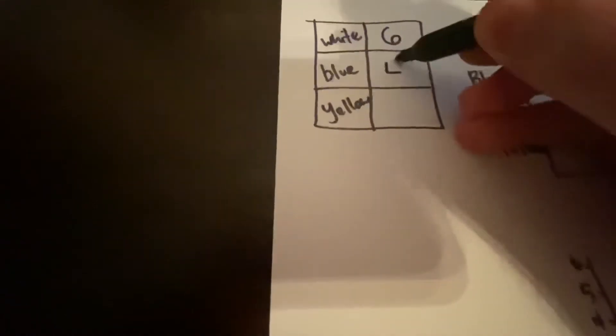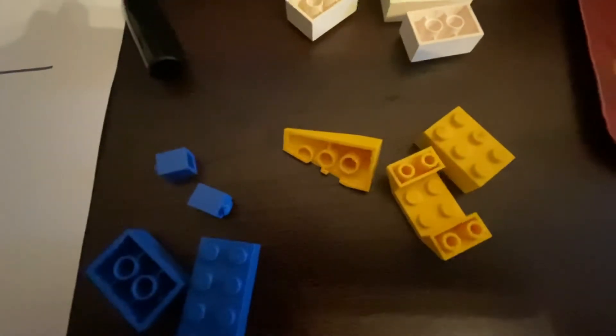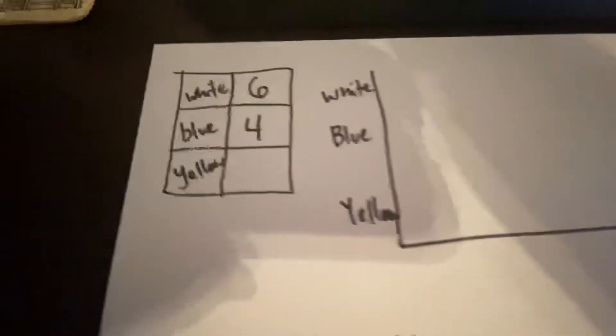Blue is my next color. So I've got one, two, three, four blue. Come back over to our table. Four. And then you can see three yellow there. Come back over here and jot down that we've got three yellow.